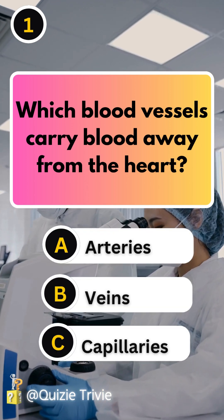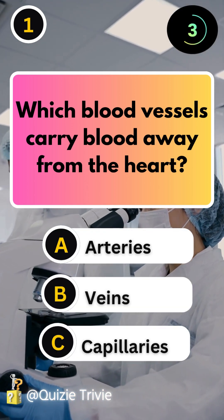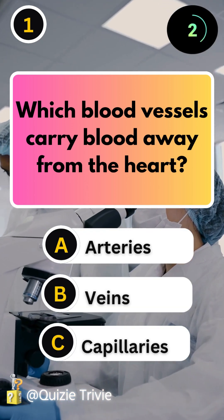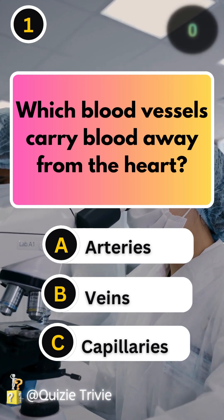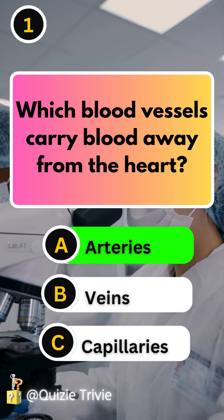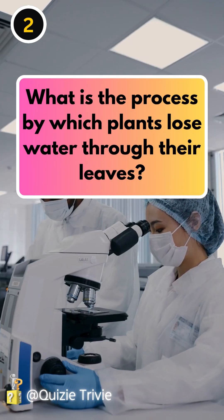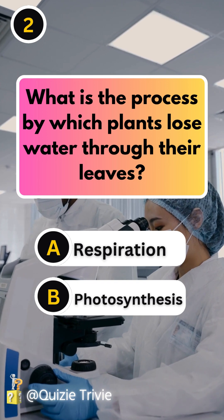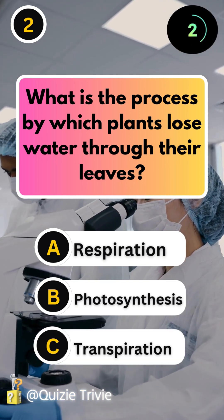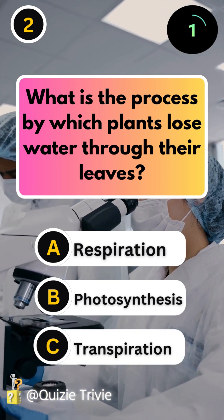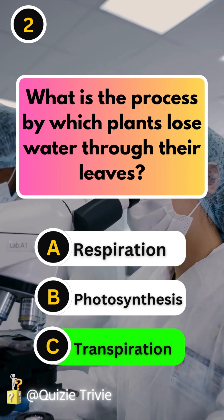Which blood vessels carry blood away from the heart? Arteries. What is the process by which plants lose water through their leaves? Transpiration.